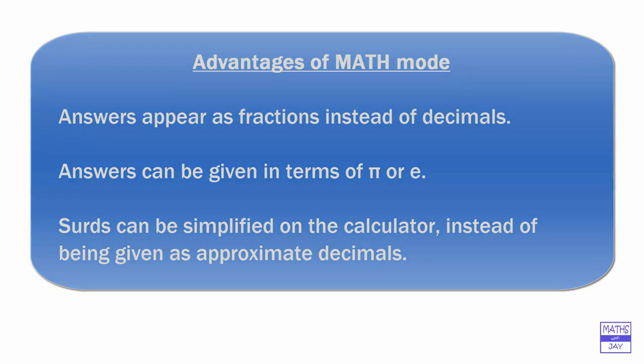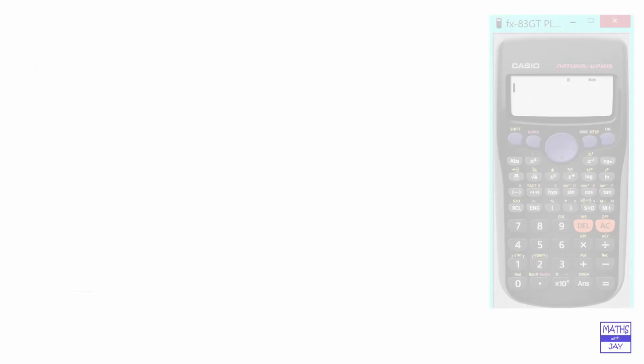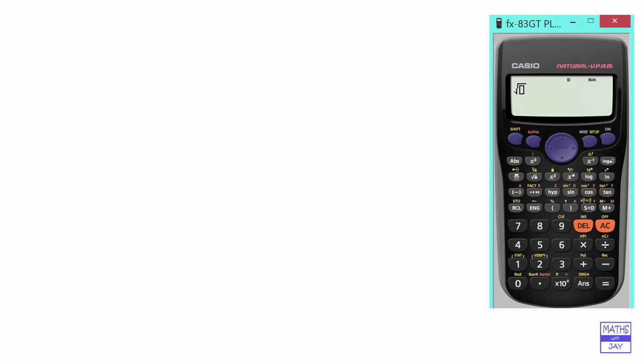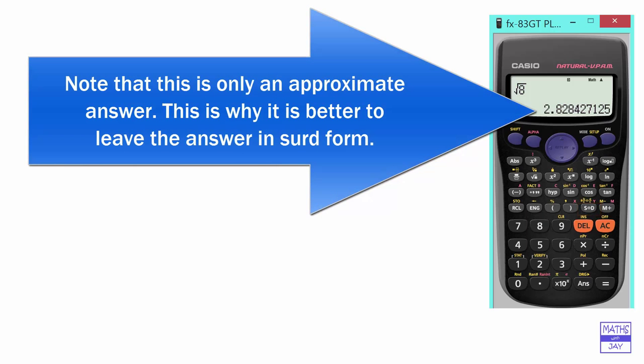So for example, if I key in the square root of 8 once my calculator is in math mode and do equals, instead of giving me the answer as a decimal, we'll get 2 root 2. But if we want the answer as a decimal, we use this little key here which will convert from standard to decimal or back again. So if we use this key, it will give us the decimal value of root 8, and we hit it again to go back to the 2 root 2.